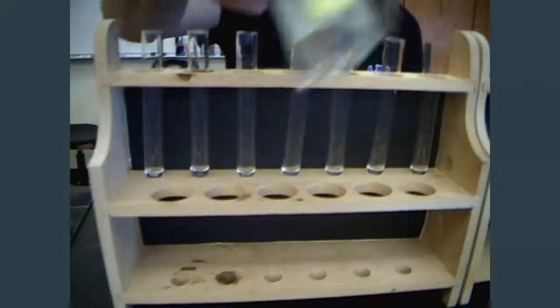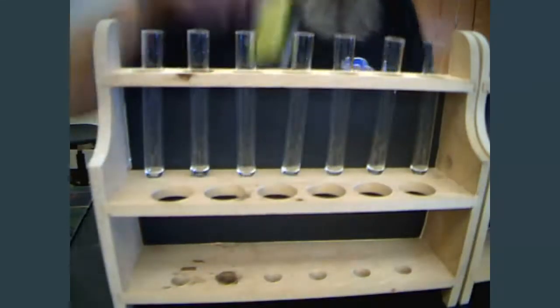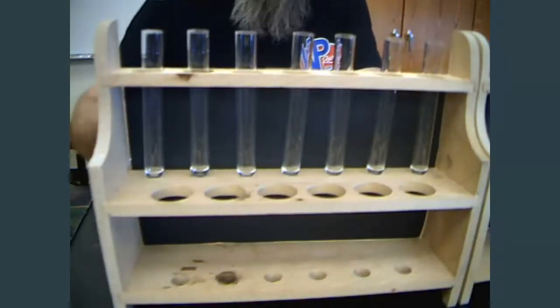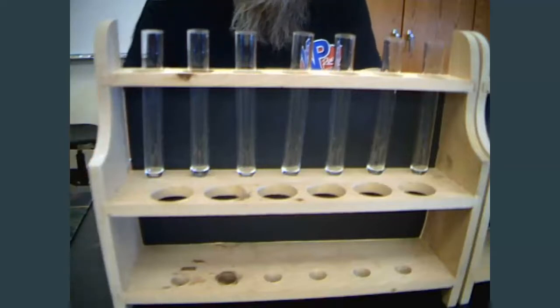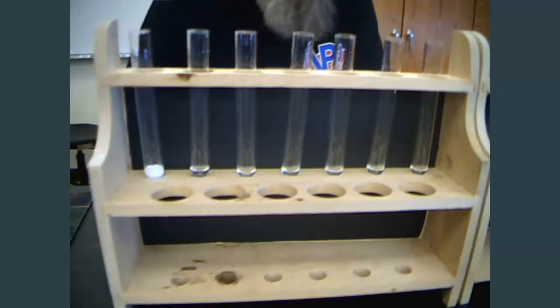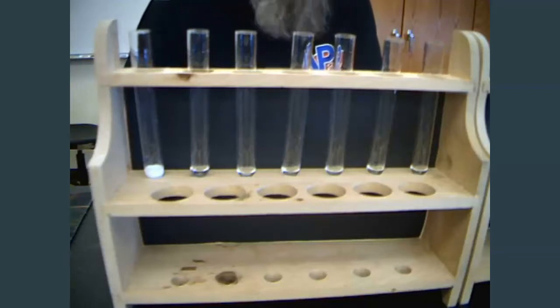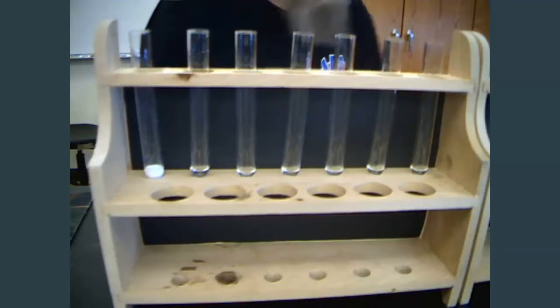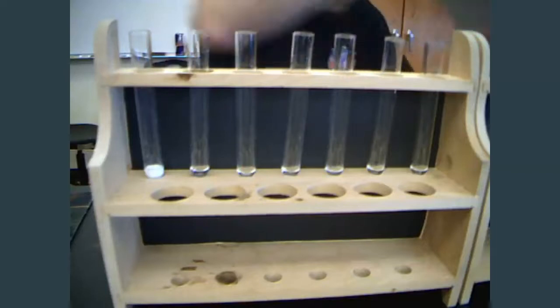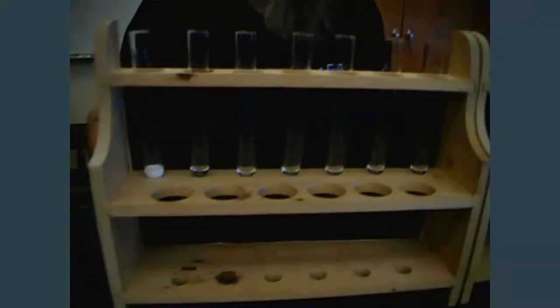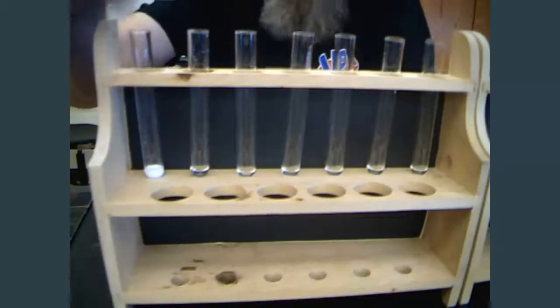In test tube number one, according to our sheet here, we have to add some NaCl, sodium chloride. These are all 0.1 molar solutions. I'm just going to add a couple of drops. Oh, and definitely there is a chemical reaction there between silver nitrate and sodium chloride. So on your lab report sheet, under number one, you could just write white precipitate.